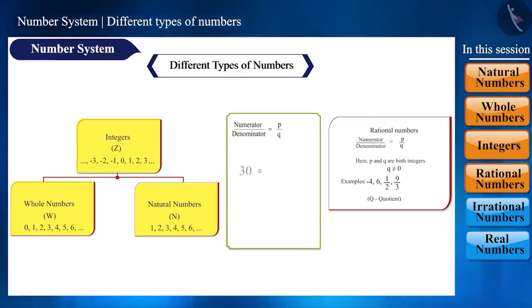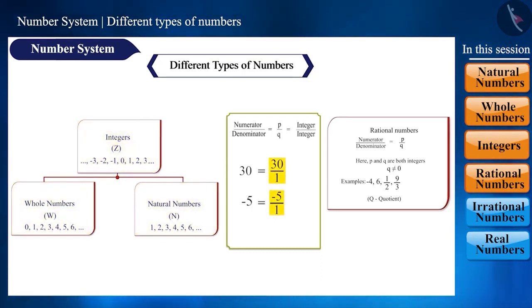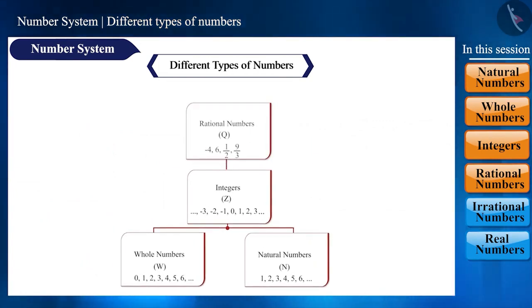Yes, we can represent all these numbers in the form P by Q, such as 30 equals 30 by 1, minus 5 equals minus 5 by 1. Here, the numerator P and the denominator Q are both integers. That is, all these numbers are rational numbers.